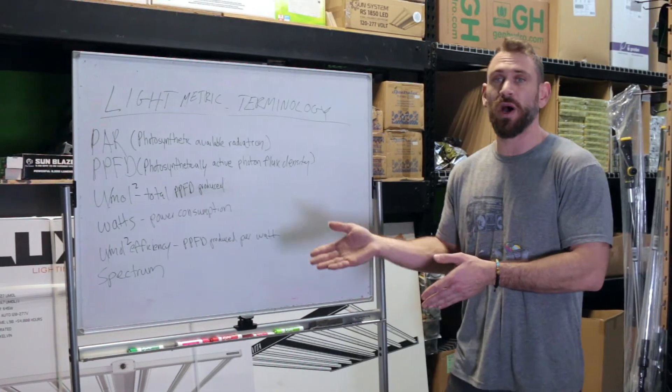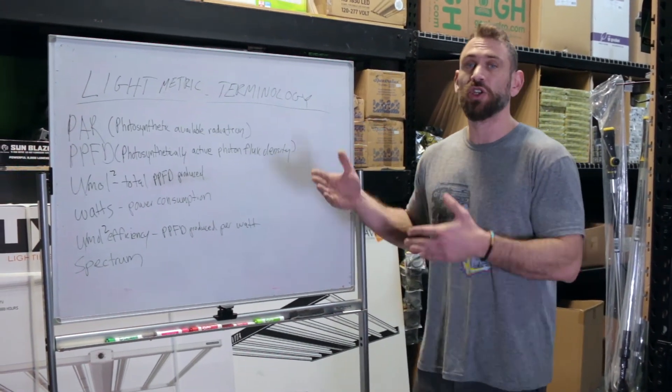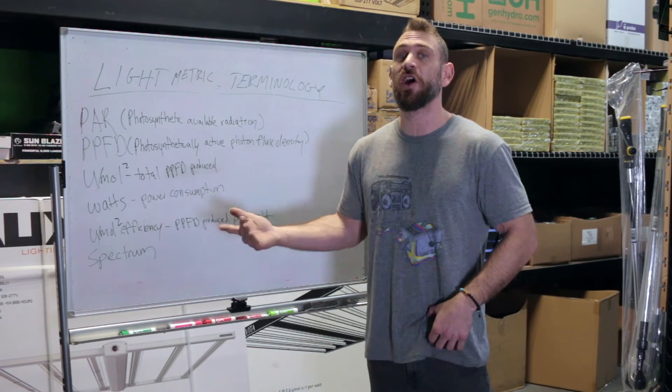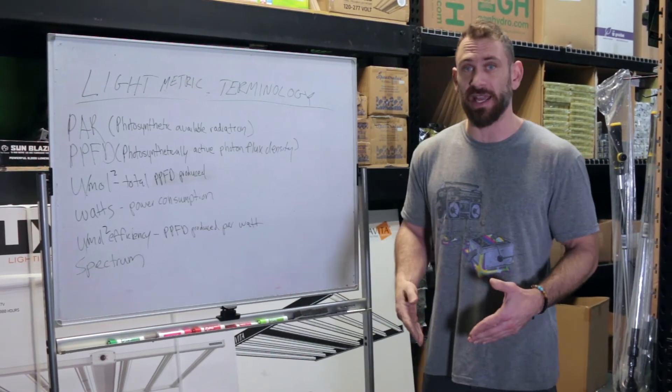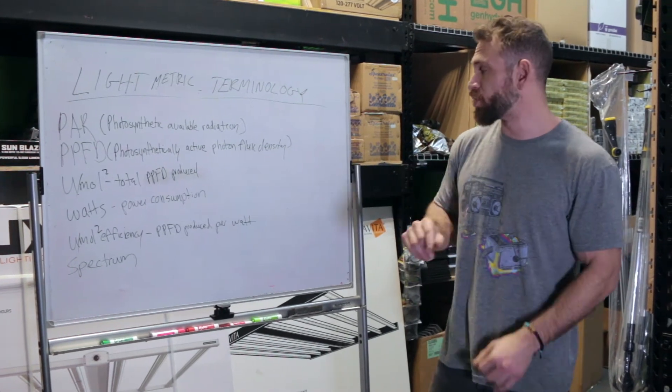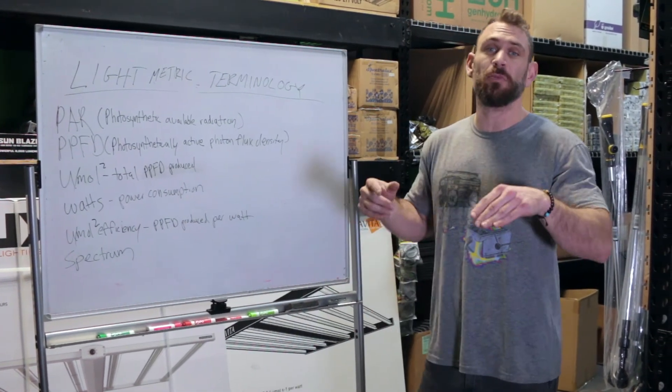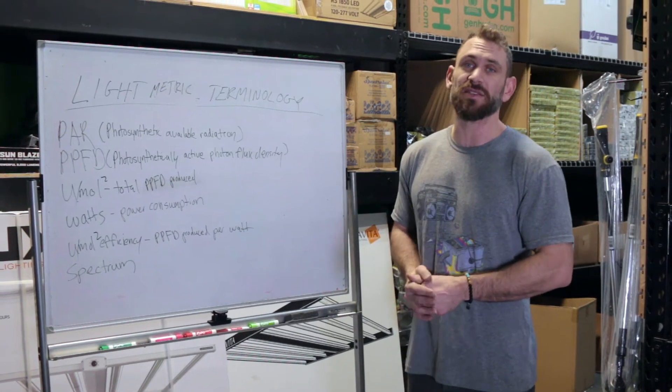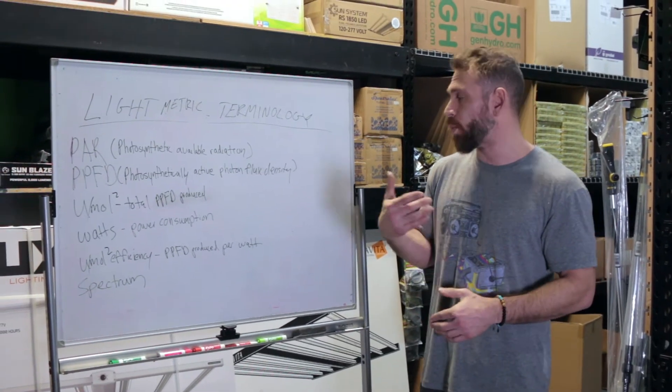So a 1,000-watt HID light will produce a similar total U-moles to a 700-watt LED light. So the total amount of U-moles is the same, but the amount produced per watt is going to be significantly more with an LED light, making it significantly more efficient and producing way less heat.